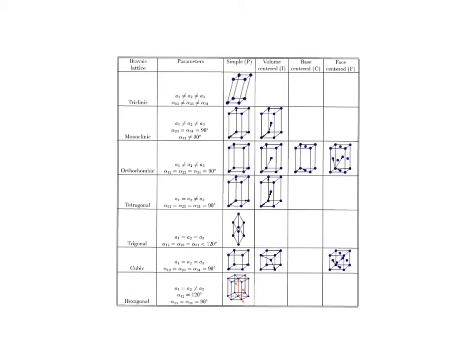Note that some of these crystal systems have multiple unit cells depicted. For example, the monoclinic system has two choices: one called simple or primitive — where 'P' represents primitive — and another which is body-centered, meaning there are lattice points at the corners of the unit cell plus one at the body center. Likewise, the orthorhombic system has four: simple or primitive, body-centered, base-centered, and face-centered. And if you jump ahead to the cubic system, you've got three: simple cubic, body-centered, and face-centered.